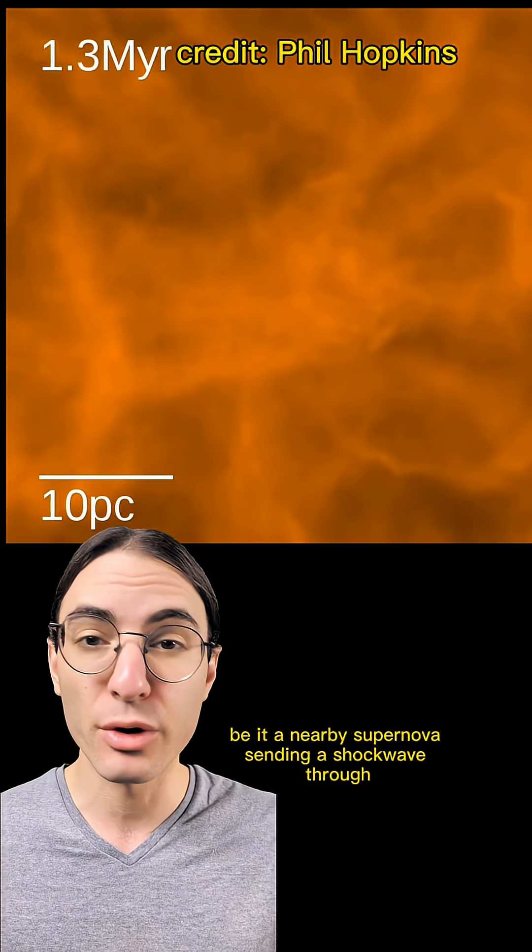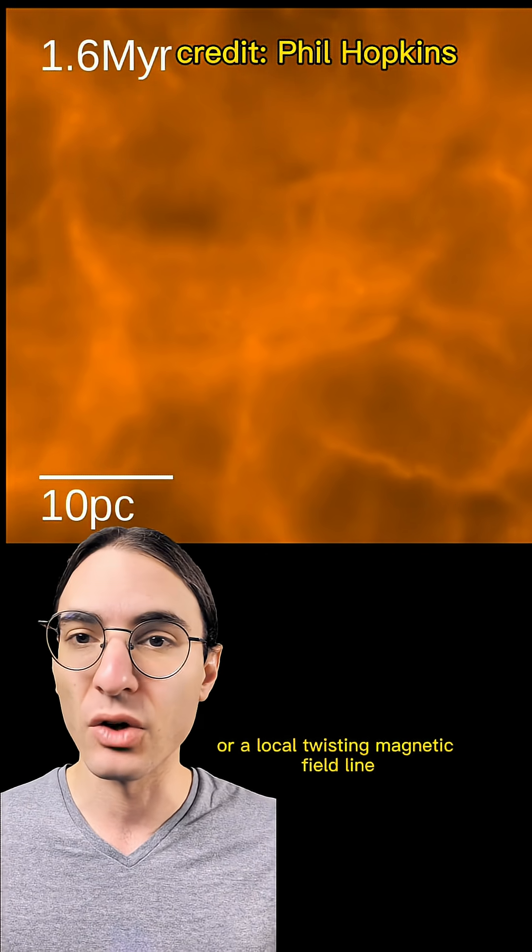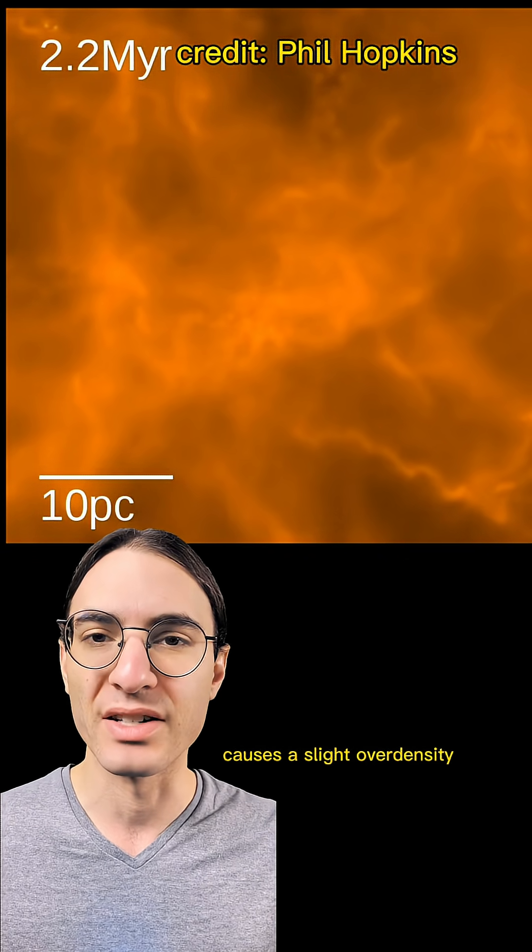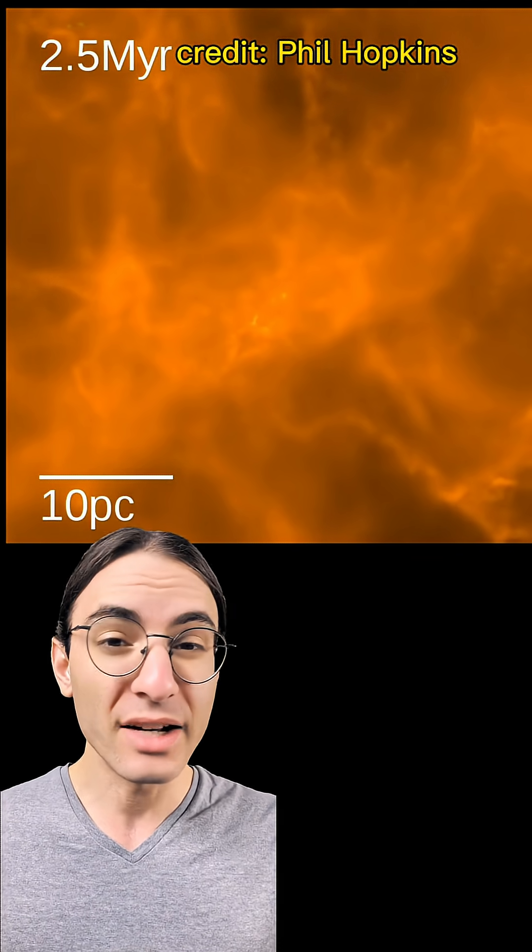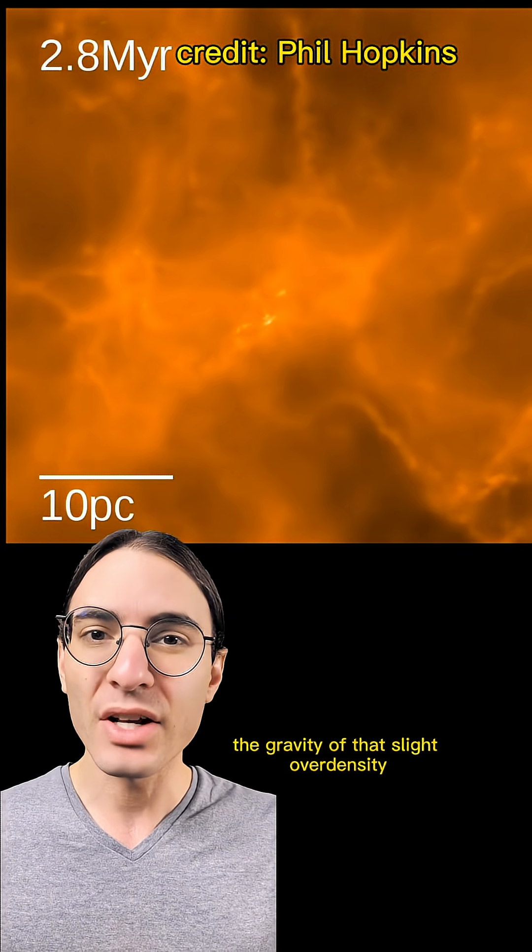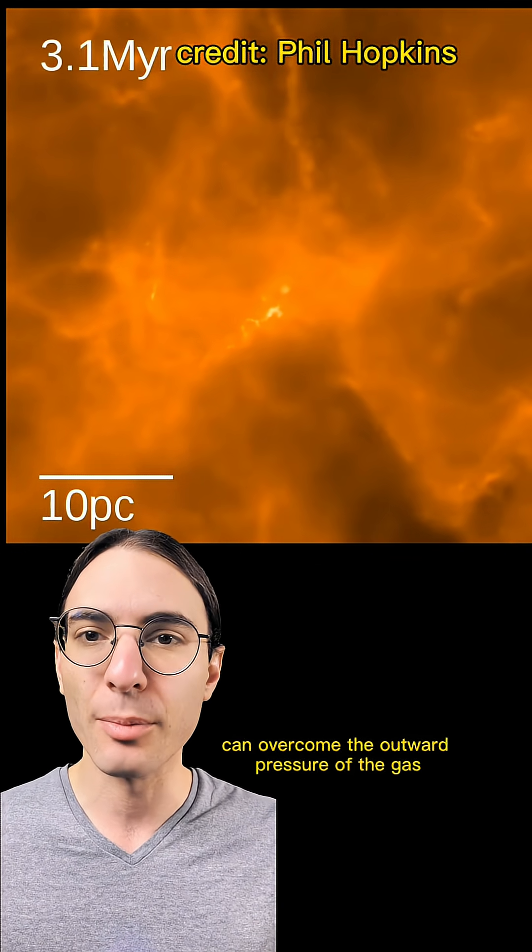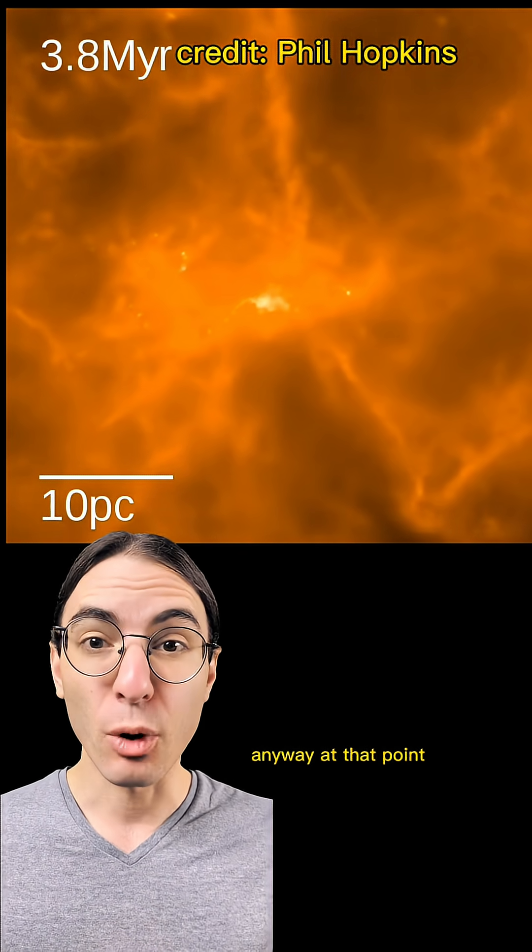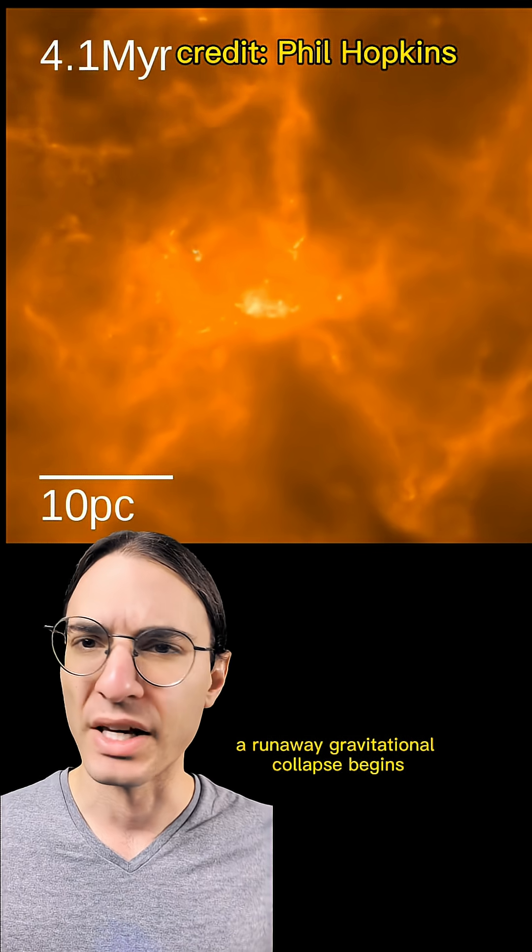be it a nearby supernova sending a shockwave through, or a local twisting magnetic field line finally snapping, some sort of disturbance causes a slight over-density in a small region of the cloud. And if the cloud is cold enough, the gravity of that slight over-density can overcome the outward pressure of the gas, because the pressure gets bigger the hotter the gas. Anyway, at that point, a runaway gravitational collapse begins.